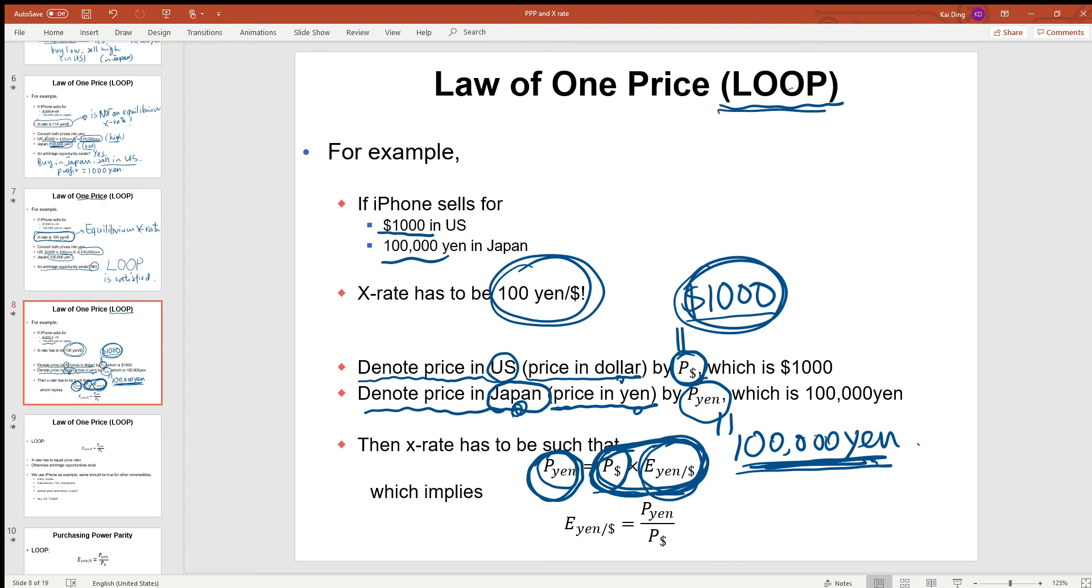According to law of one price, we have to get the same. So this basically gives us an equation that relates the exchange rate to the prices in US and in Japan.